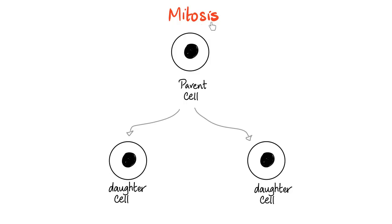Mitosis. What does 'osis' mean? Osis means a state or a condition. What does 'mite' mean? It came from a Greek word, mitos, which means the length of a thread that's used to separate and wrap threads. So in other words, there is separation — separation of one parent cell into two identical, beautiful daughter cells.